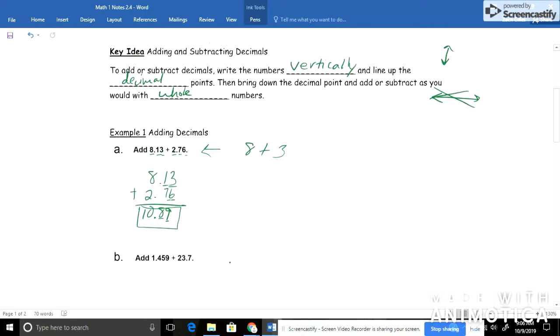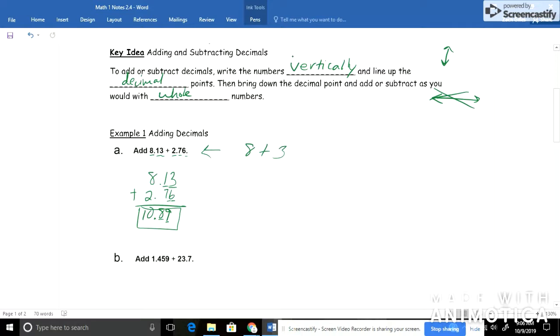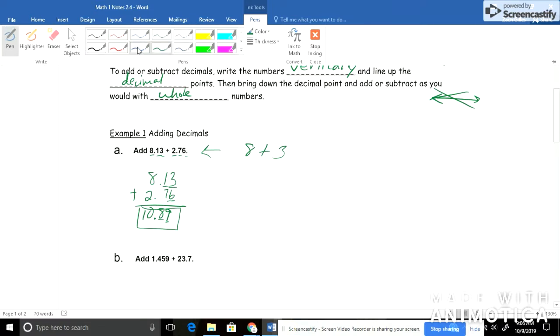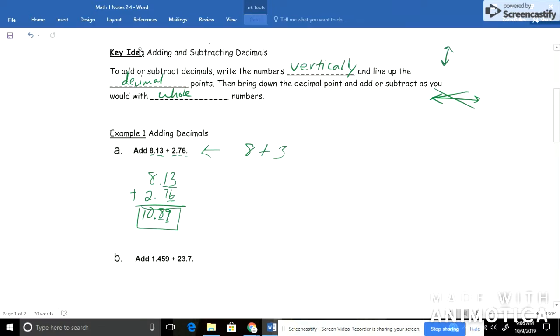For letter B now, you'll notice that we've got different amounts of place values. So in the first problem here, we've got 1, 2, 3, 4 digits. And in this number, we only have 3 digits. And in the first number, we've got a number in the 1s place. And here, we've got a number in the 1 and 10s place. So the biggest thing to remember is that you need to line up your decimals. So my first number is 1.459. And I need to add to that 23.7. I need to line up my decimals. So I'm going to kind of work backwards here.